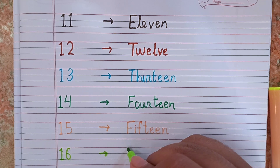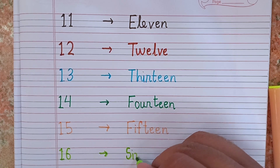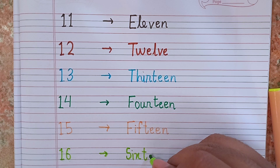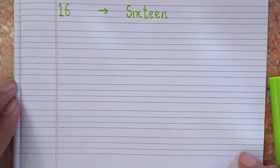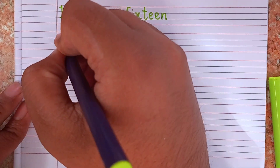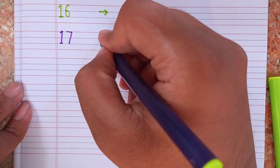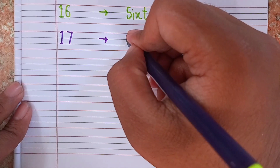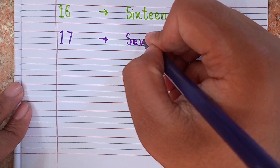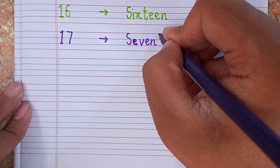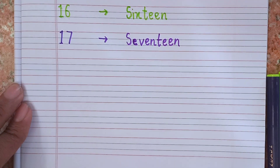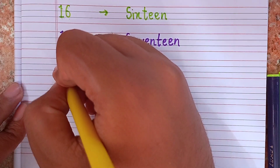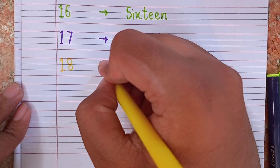After 15, I am writing 16. Now I am writing the spelling: S I X T E E N. 11, 12, 13, 14, 15, 16. After 16, I am writing 17. Remember the spelling S E V E N T E E N. Remember the spelling of 17, S E V E N T E N.